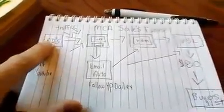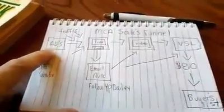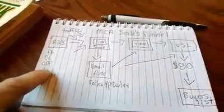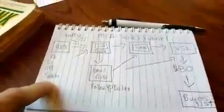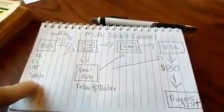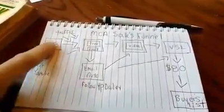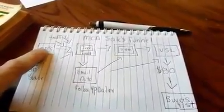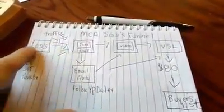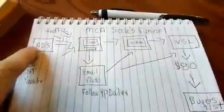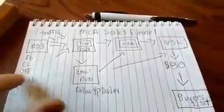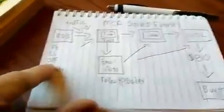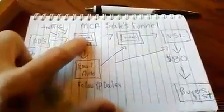So everything starts with your ads. If you're doing Facebook ads, Craigslist ads, offline marketing, or you're making YouTube videos, this is where you're going to get traffic. You're going to place your ads online, whether it be on Facebook, Craigslist, offline marketing, or YouTube.